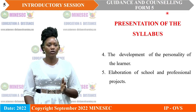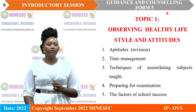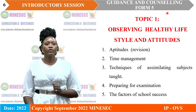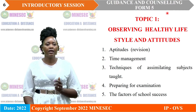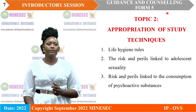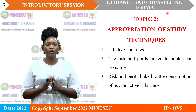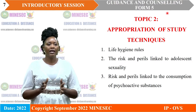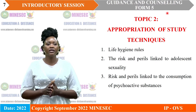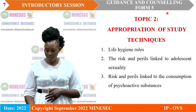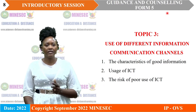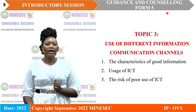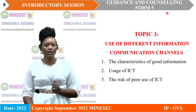These topics have subtopics, and the subtopics equally have lessons. The first subtopic under topic one is aptitudes, followed by time management, techniques of assimilating subjects taught, preparing for examinations, and the factors of school success. Topic two covers life hygiene rules, risks and periods linked to adolescent sexuality, and risks linked to the consumption of psychoactive substances. Topic three is titled use of different information and communication channels.